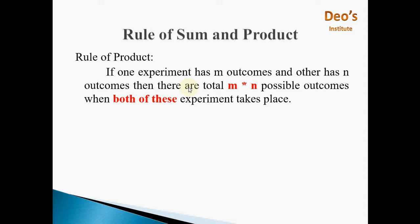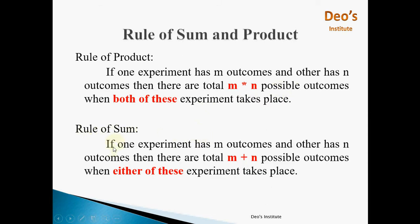Before we actually start with problems of permutation, you must know the rule of sum and product. What is the rule of product? If one experiment has m outcomes and another has n outcomes, then there are total m times n possible outcomes when both of these experiments take place. Rule of sum: when both experiments take place we multiply the outcomes; if either of the experiments takes place, then we add the outcomes to get the final total outcome.